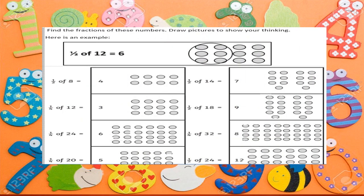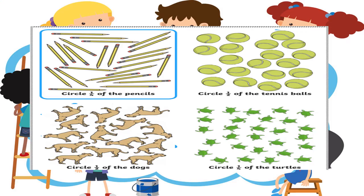Here is a worksheet: find the fraction of these numbers and draw pictures to show your thinking. For example, half of 12 is equal to 6 — we have 12 circles and we circle half of them, which is 6. In the next question, half of 8 is equal to 4. There are 8 circles total and you circle only half, which is 4 circles. Complete this worksheet in the same way.